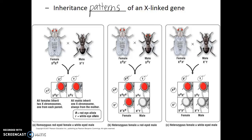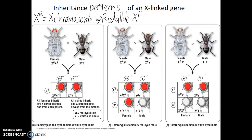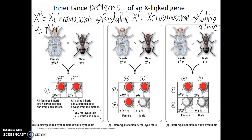There are three chemical symbols I would like to introduce that are used in this genetic cross. There is X superscript capital R — this is going to be an X chromosome with a red eye color allele. Compared to X superscript lowercase r — this is going to be an X chromosome with a white eye color allele. And then lastly we have Y, which is a Y chromosome that doesn't have an eye color allele.